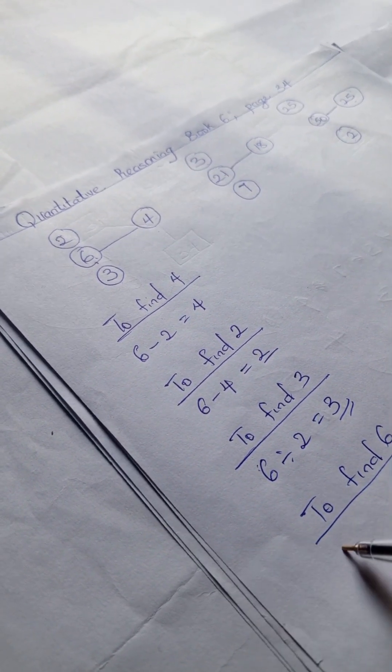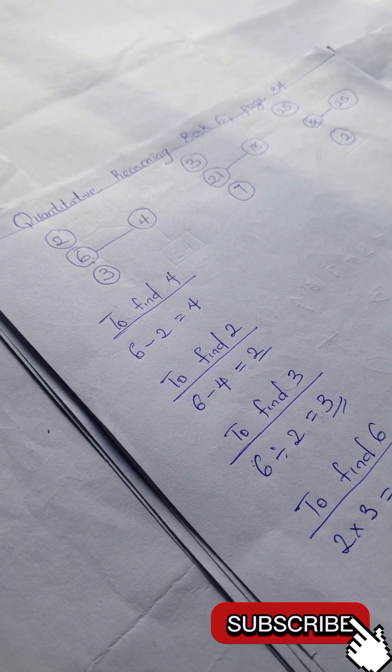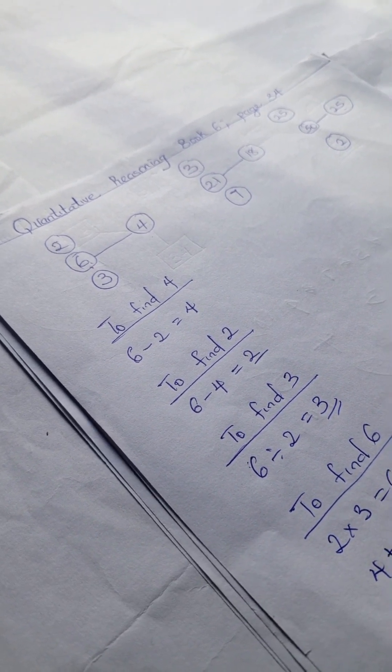To find 6, we can either have 2 times 3 equals 6, or we can have 4 plus 2, that gives us 6.